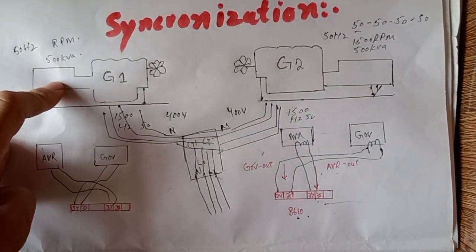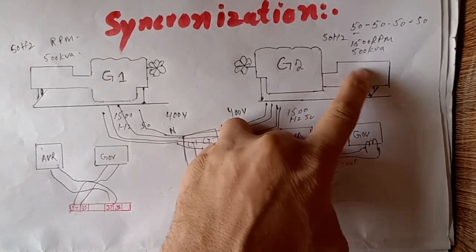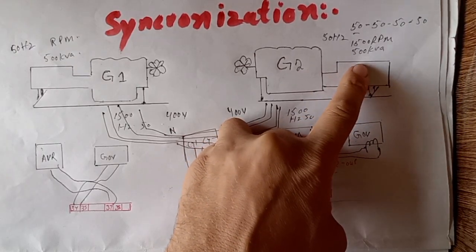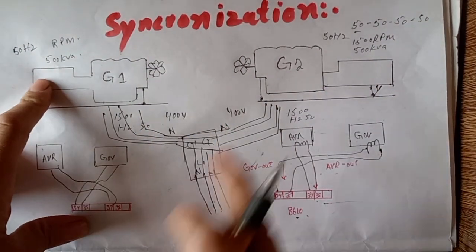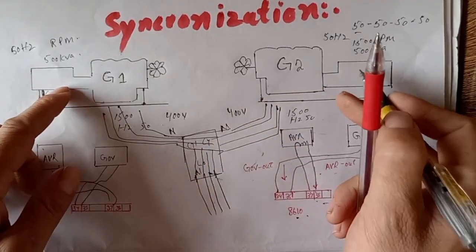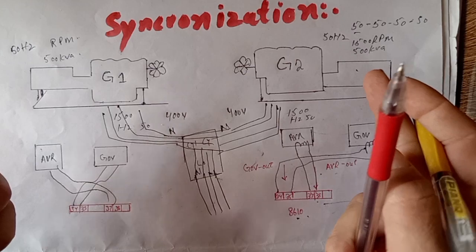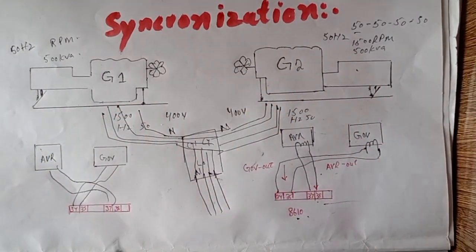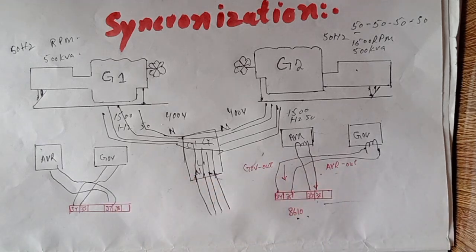If one generator is in series connection, you need to change that alternator connection to match. Both generators must have the same connection type — either both star or both delta. Note that a delta connection does not have a neutral. This is the proper installation and synchronization of two generators. If you have any further questions, write in the comment section and I will respond as soon as possible.